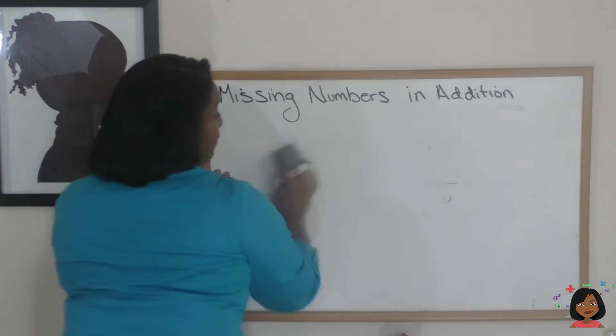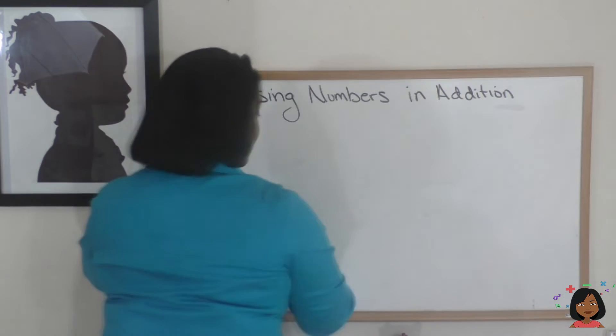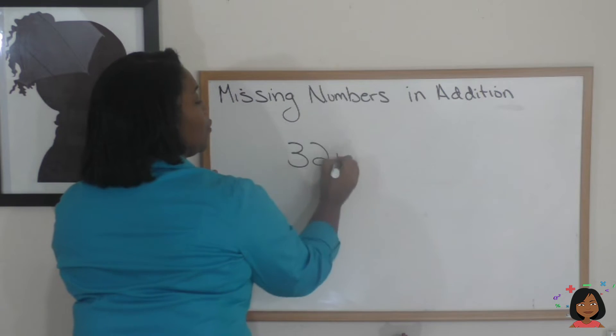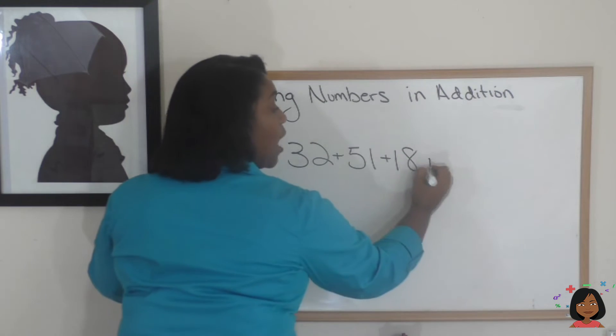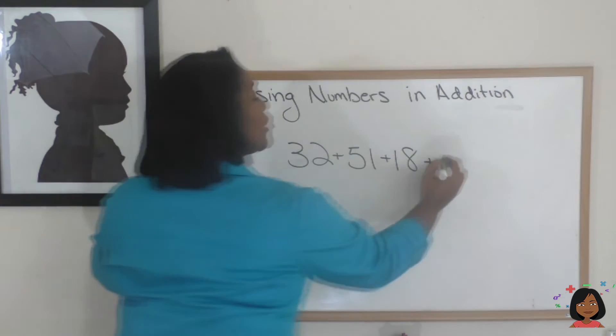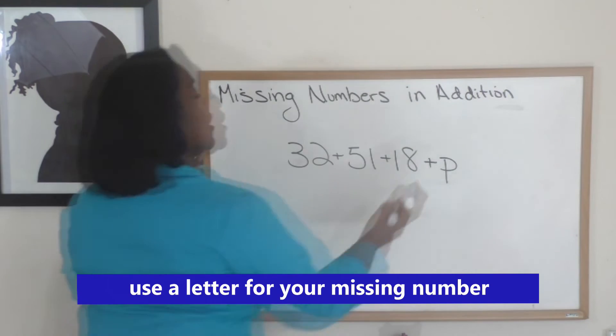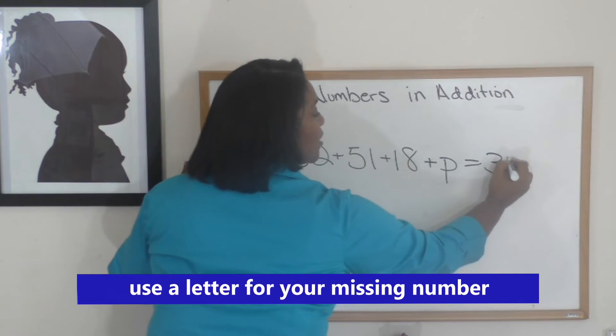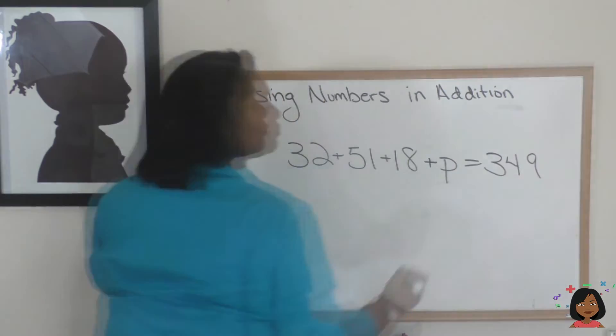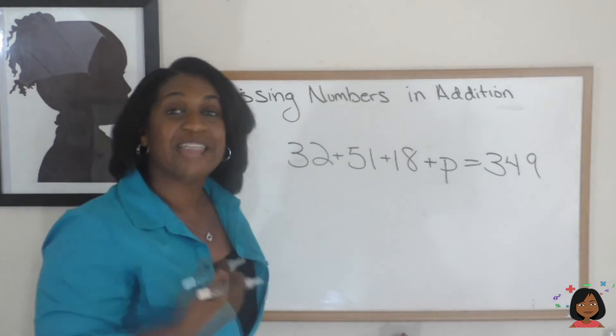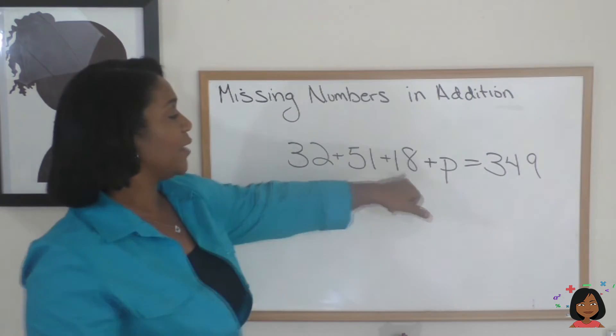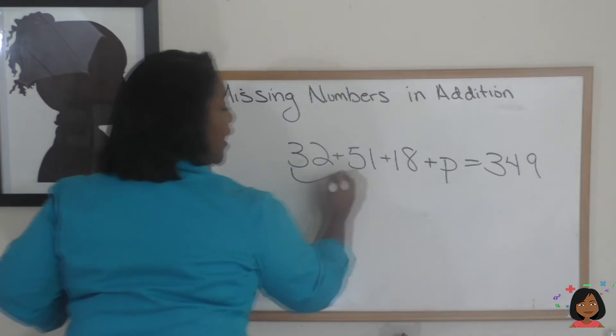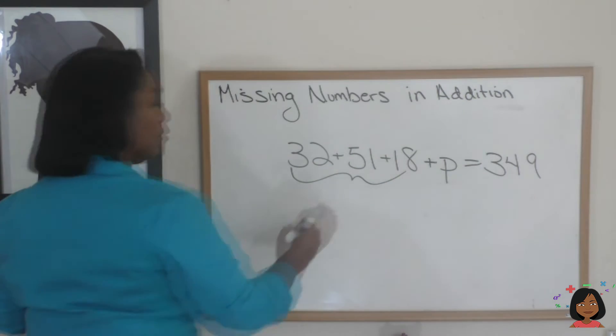Let's say I had several numbers that I was adding together. 32 plus 51 plus 18 plus some number. I'm feeling like using a P. Some number, when added all together, will give me 349. How do I do this? Well, let's take care of what we actually know up front. We know we've got 32, 51, and 18, and we can add those together and get one number. Let's do it.